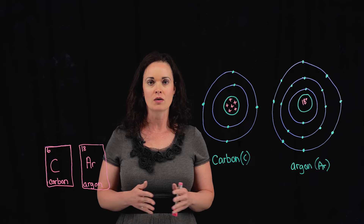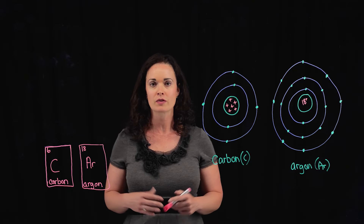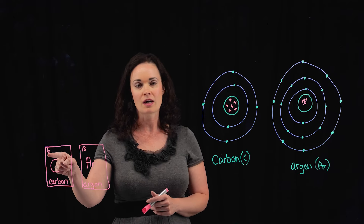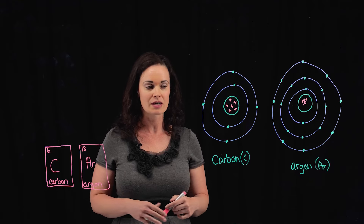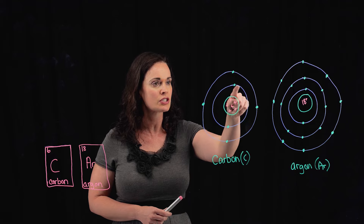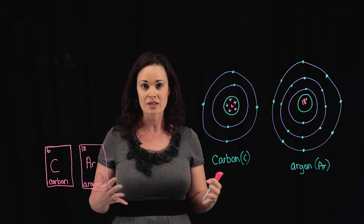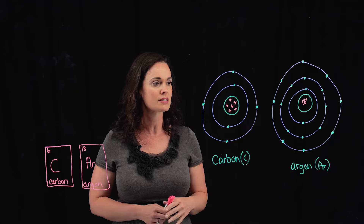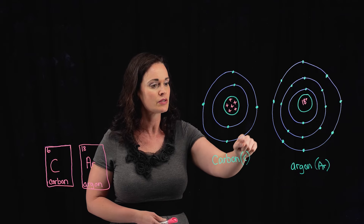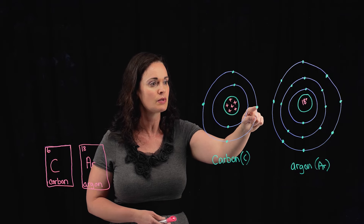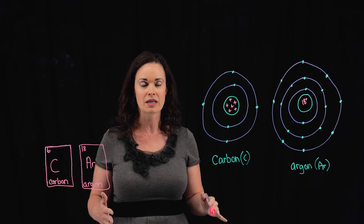Hopefully you paused the video and drew Bohr models for carbon and argon. Let's check your work. Carbon has an atomic number of six, so six protons and six electrons. In the first orbital shell closest to the nucleus, two of carbon's electrons go there. Once those two electrons fill that shell, the remaining four electrons go into the second shell. So we have two electrons in the first shell and four in the second — equal numbers of protons and electrons.